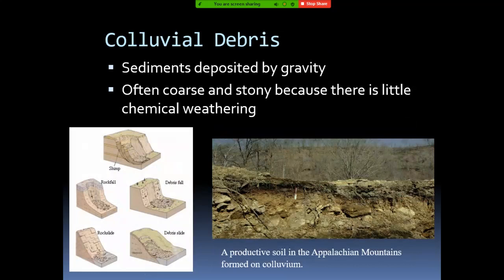If there is transportation by gravity, it means the material moves from high altitude to lower altitude — through slumping, rock fall, rock slide, or similar actions — by the effect of gravity. We call these colluvial deposits. A key characteristic of colluvial deposits is that they are coarse and stony, because the material was transported by gravity from higher to lower elevation without undergoing extensive chemical weathering. You typically find colluvial deposits closer to the mountain side.